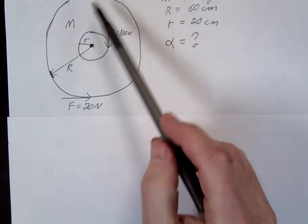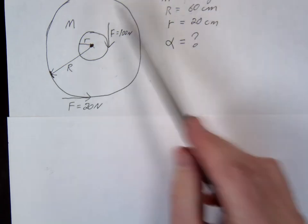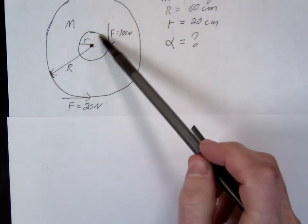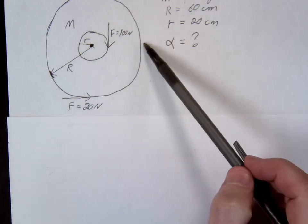In this problem, we have a wheel. Let's assume it's a solid disc. We're going to apply the force along the inside, not along the outside.